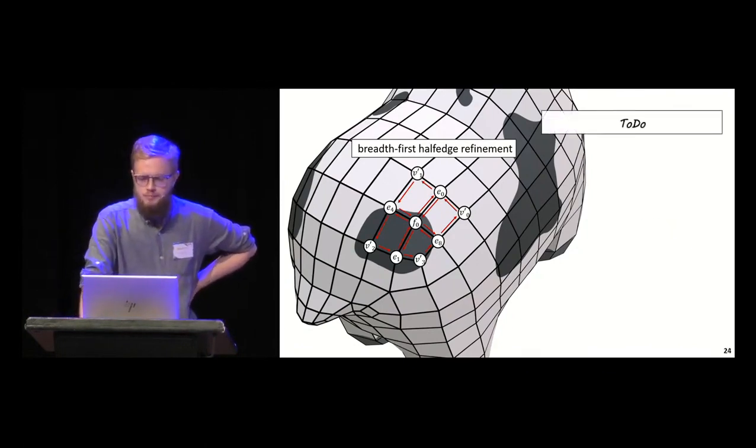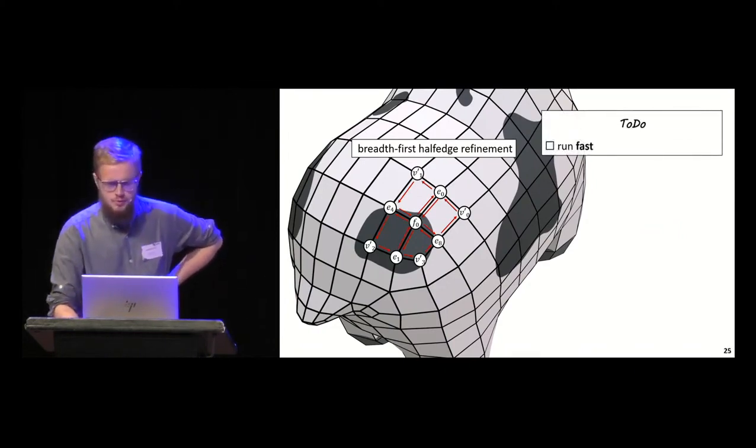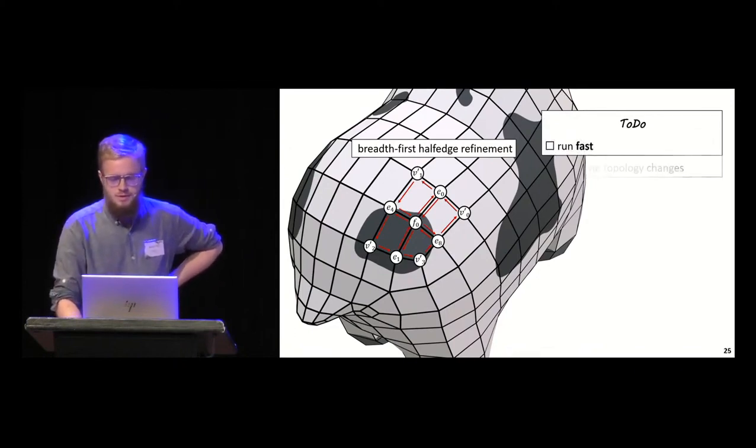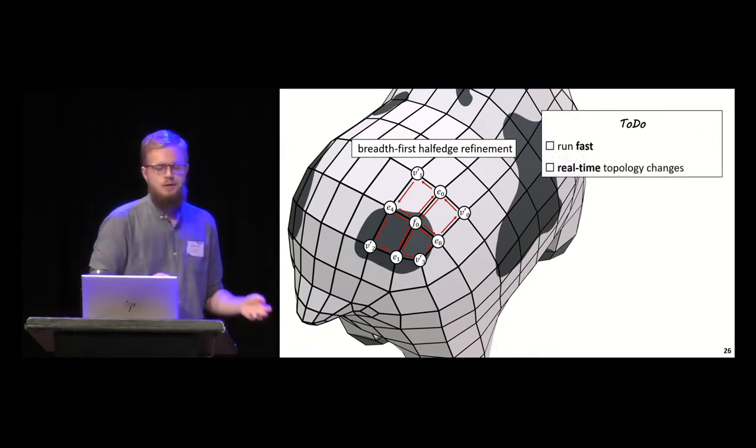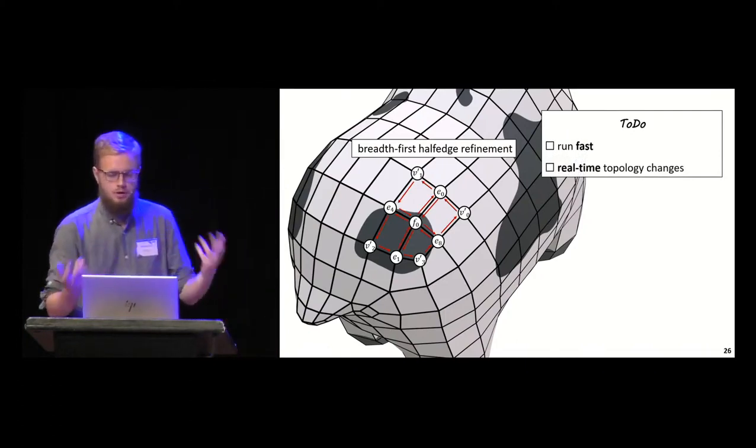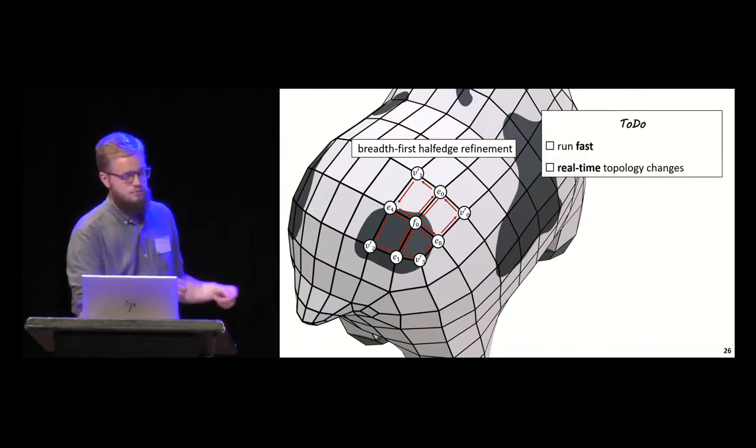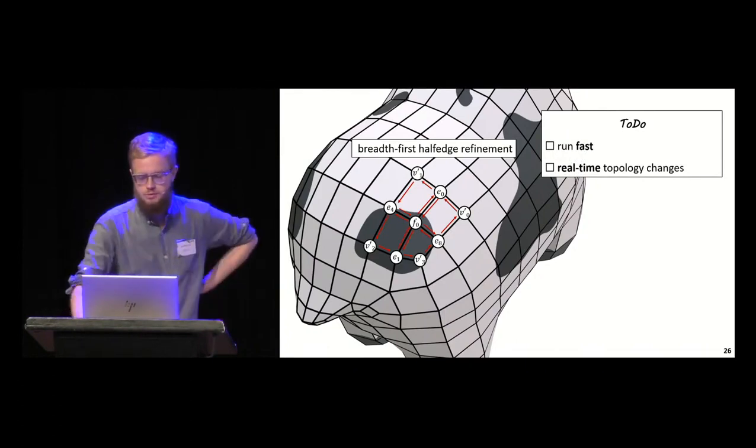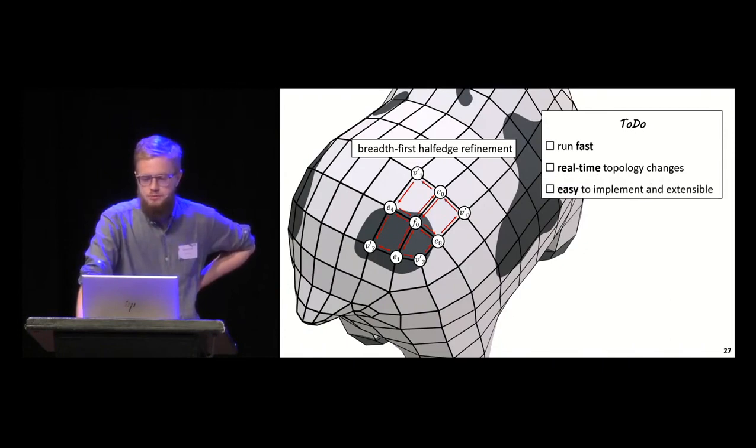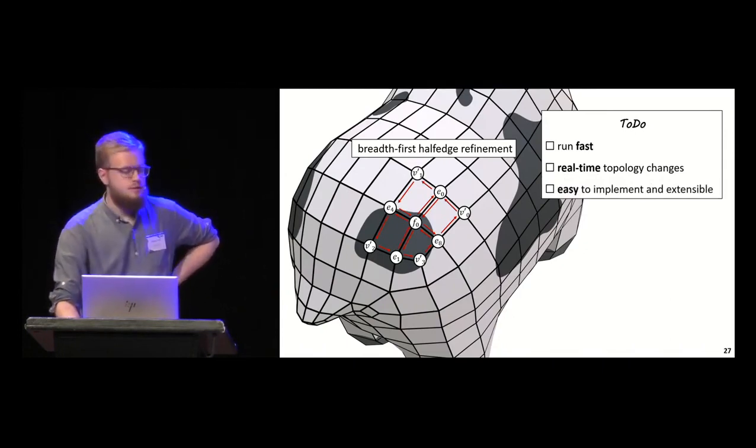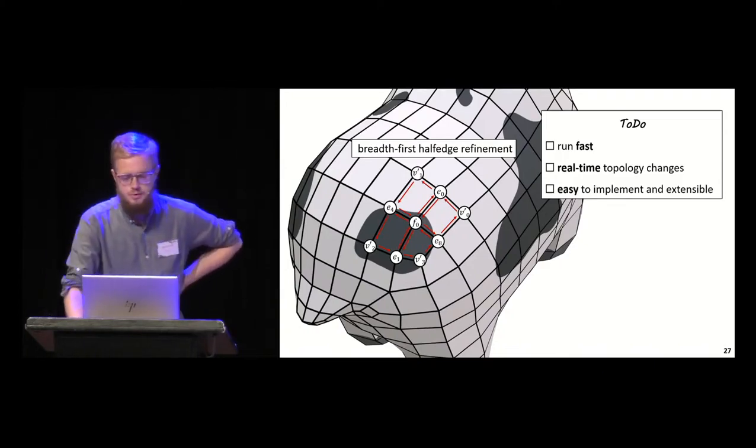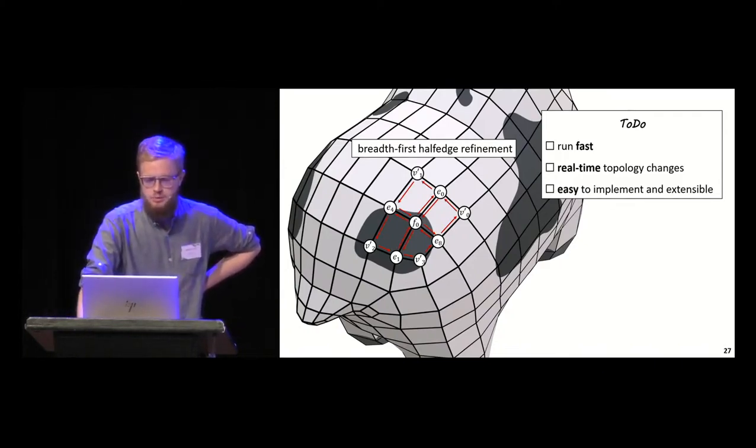This technique has some attributes we want to keep, so let's write a to-do list. We want to run fast. We want to allow for real-time topology changes. For example, if your modeling software already uses a half-edge data structure, you're good to go without any pre-processing. Half-edge is easy to implement, not that much code, and it's extensible to semi-sharp creases.